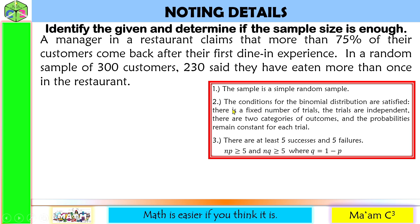Number 2, the conditions for the binomial distribution are satisfied. One of that, there is a fixed number of trials. This is our sample size, and we have here 300, our N. Next, the trials are independent. The answer of one customer will not affect the answer of the other customers. Next one, there are two categories of outcomes. It's either they go back to this restaurant or not. And last one, the probabilities remain constant for each trial. The probability of getting an answer whether a customer will come back to this restaurant or not remains constant for the rest of the 300 customers.